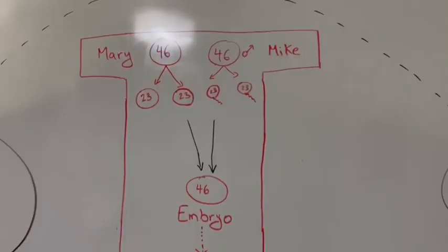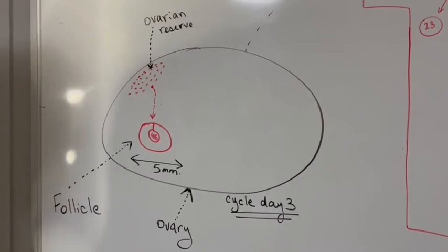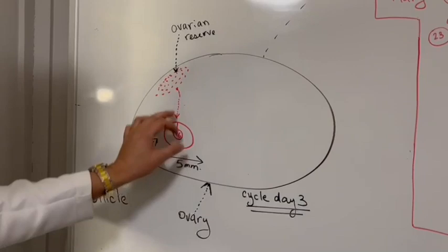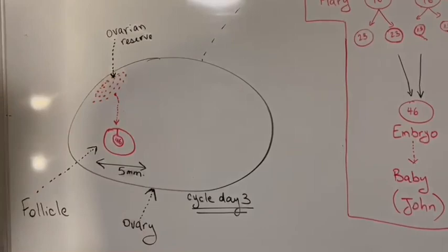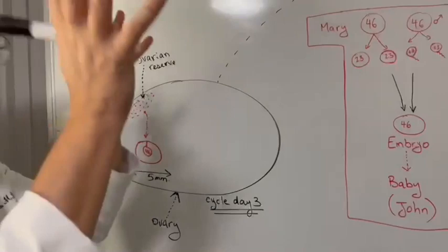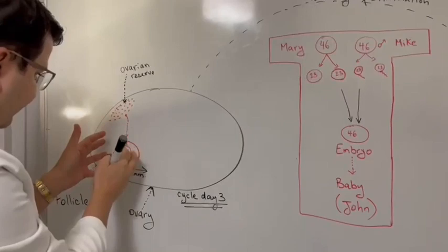Now let's go back to the ovary to show you what happened physiologically before and after stimulation. On cycle day three, the patient has a follicle that comes from the ovarian reserve, which I always tell patients ovarian reserve is like stars. And then one of those stars becomes the moon. We can't see the stars, they're too far, right? But the moon is closer and then we can see the moon, which is the follicle.